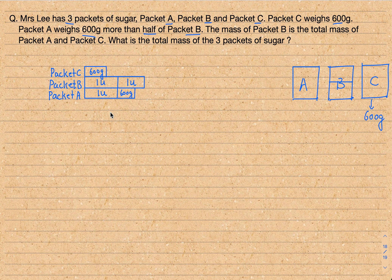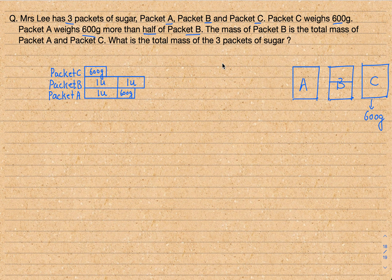So this is the model for all three packets. Packet C is 600 grams, packet B is two units, and packet A is one unit plus another 600 grams. Now, what else do we have? The last sentence says: the mass of packet B is the total mass of packet A and C. So the mass of packet B is actually equal to the total mass of A and C.